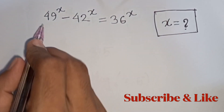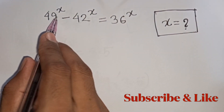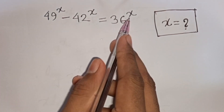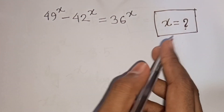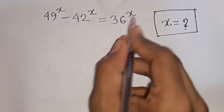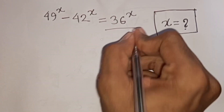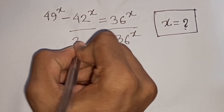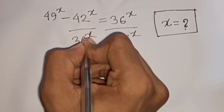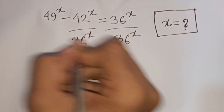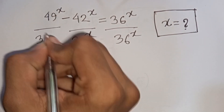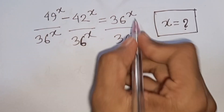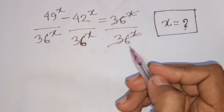How to solve 49^x minus 42^x equals 36^x. What is the value of x? First, we divide both sides by 36^x. So divided by 36^x on both sides — this will be cancelled.